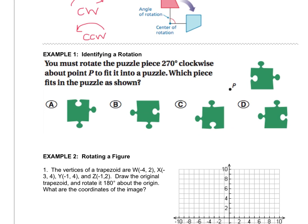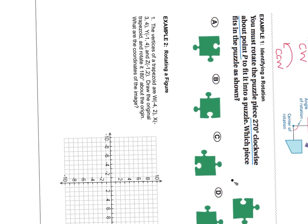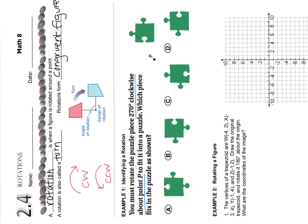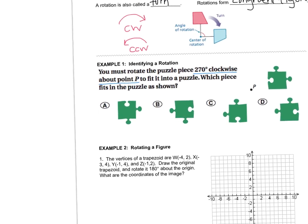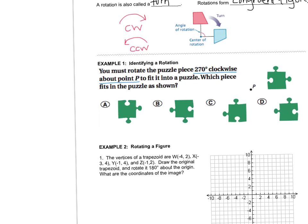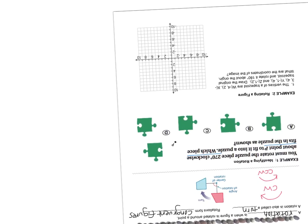Let's look at example one. You must rotate the puzzle piece 270 degrees clockwise about point P. First we have to talk about what the degrees stand for. When you're turning something clockwise or counterclockwise, it will tell you the degrees to turn. Every time you make a quarter turn like this, that's 90 degrees. You can go 90, 180, 270, or a full 360. For beginner rotations, we're going to do multiples of 90 because it's easy when we turn our paper.